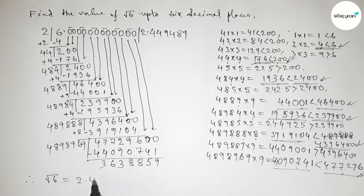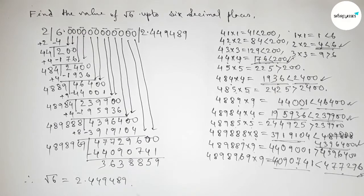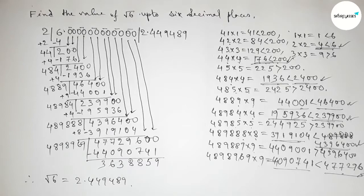So that's all. Therefore the value of root 6 up to 6 decimal places is 2.449489. Thanks for watching. If this video is helpful to you, please share it.